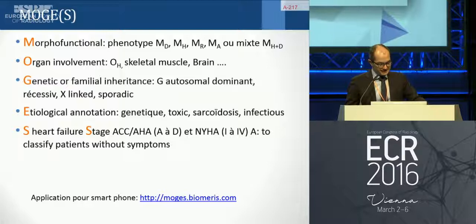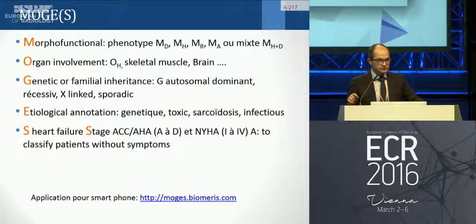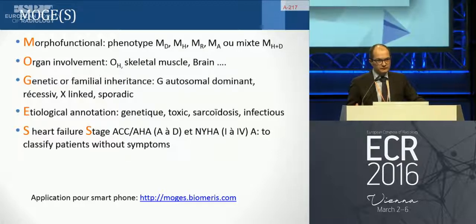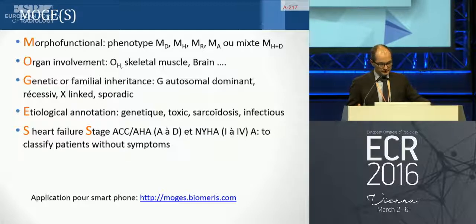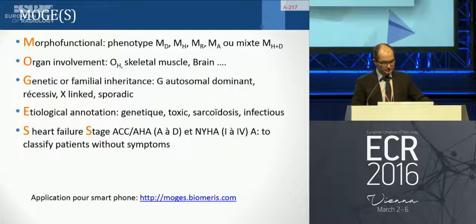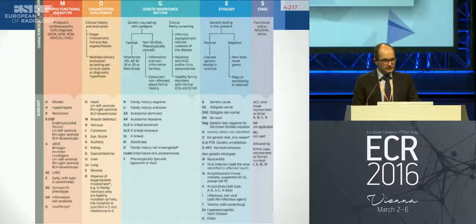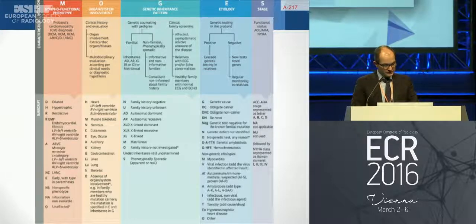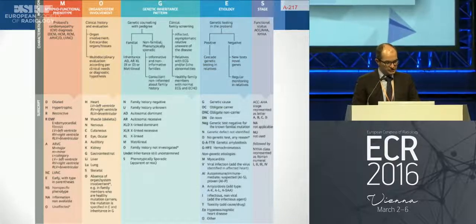One important marker is the S, which represents heart failure stages. Some patients are known to have the disease but are asymptomatic. Before this classification, it was not possible to include them or tell them they have a real cardiomyopathy. Now, with this new classification, you can include asymptomatic patients. You can upload a smartphone app to define and characterize your patient.